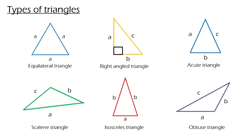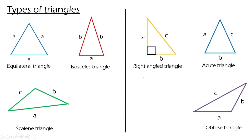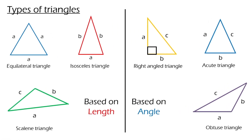There are six types of triangles which are: equilateral triangle, right angle triangle, acute triangle, scalene, isosceles, and the final one is obtuse triangle. We can categorize these six triangles into two categories based on length and angle. Let's start discussing the triangles based on length.